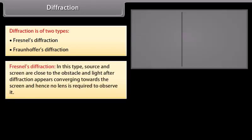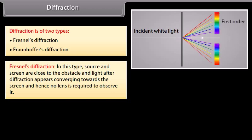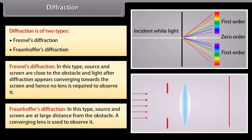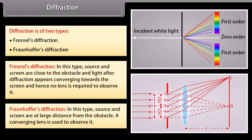In Fresnel's diffraction, the source and screen are close to the obstacle, and light after diffraction appears converging towards the screen; hence no lens is required to observe it. In Fraunhofer's diffraction, the source and screen are at a large distance from the obstacle, and a converging lens is used to observe it.